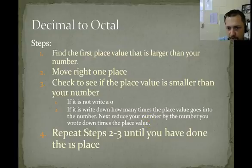Next, reduce your number by the number you wrote down, which is the value that you put into place, times the place value. If the wording is a little bit weird, it will make sense on the next slide. So whatever you write down, you reduce your number by the place value times the digit you just wrote. And then you repeat steps 2 and 3 until you've reached the 1 place. So let's go look at an example and see how this is done.